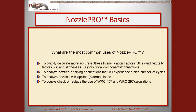Some of the most common uses of NozzlePro are to quickly calculate more accurate stress intensification factors, flexibility factors, and stiffnesses for critical components or connections, to analyze nozzles or piping connections that experience a high number of cycles, to analyze nozzles with applied external loads, and to double-check or replace the use of WRC-107 and WRC-297 calculations for local stresses.